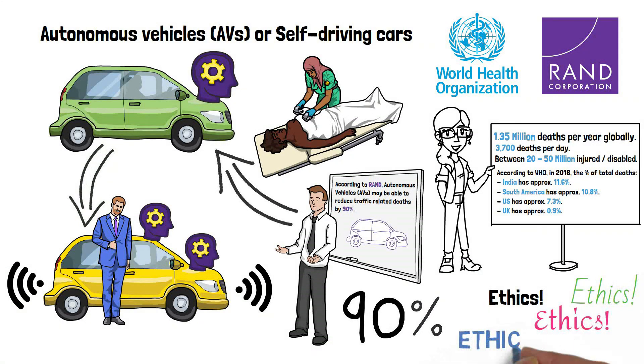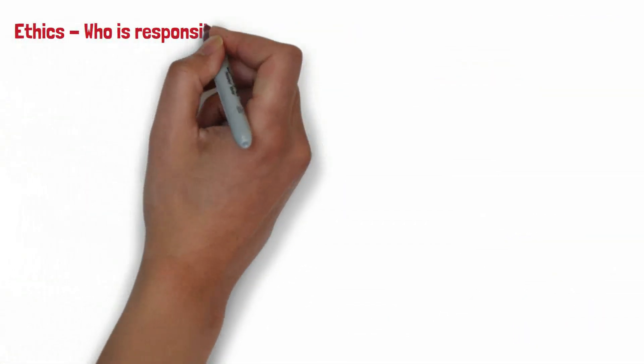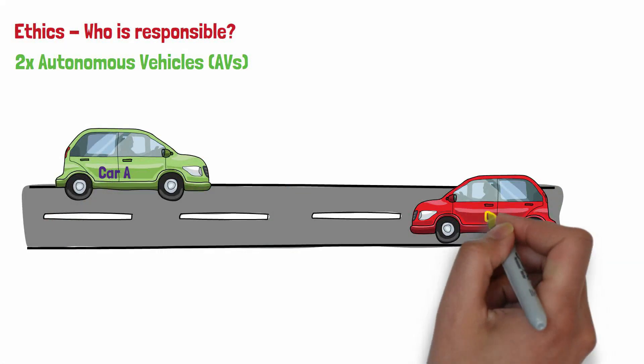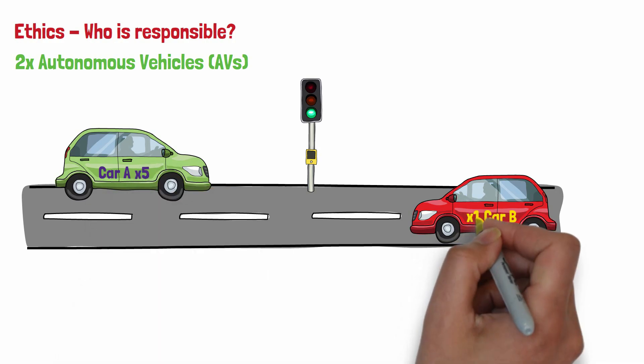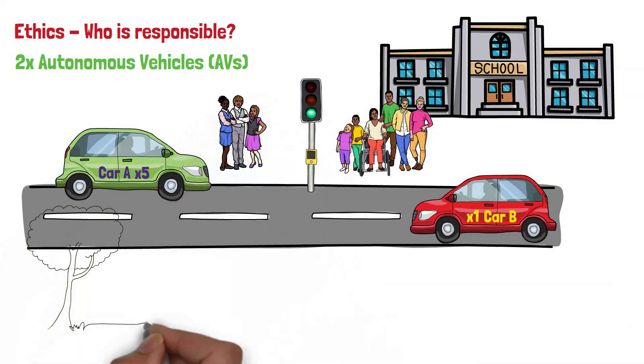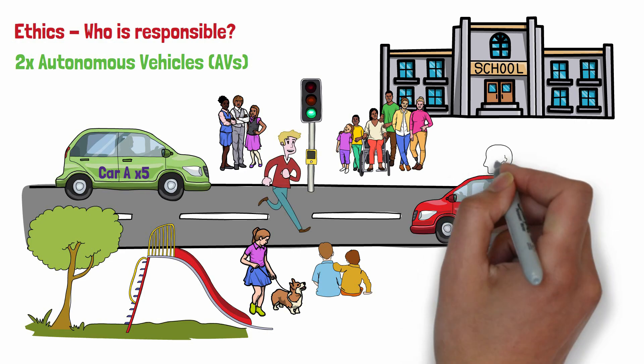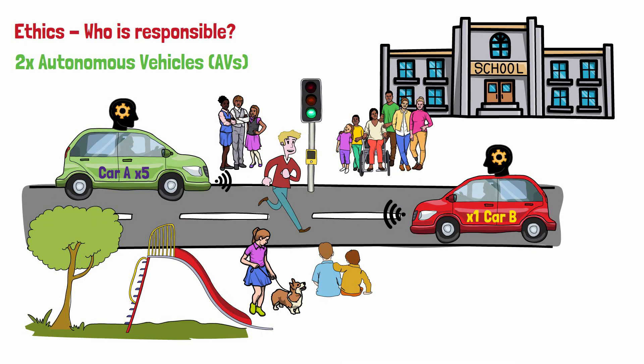However, there are some ethical considerations to be determined first. Let's imagine, for example, two autonomous cars, car A and car B, are driving towards an intersection with a green light. Car A has five passengers, while car B has only one passenger. As they approach the intersection, a pedestrian suddenly steps into the crosswalk.